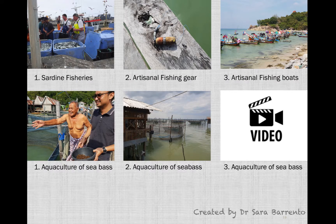Going back to the first pictures I showed you — here are the results. The first picture was a sardine fishery in the north of Portugal, where sardines were unloaded at the fishing port of Matusinius — a fishery. The second was a fishing gear, also a fishery. The third showed artisanal fishing boats in Thailand — fisheries again. The last three pictures were aquaculture: Asian sea bass aquaculture, another sea bass aquaculture, and finally a video of closed-system farming of sea bass broodstock.